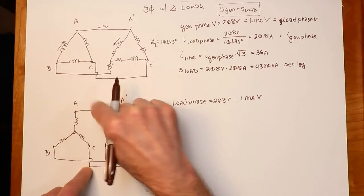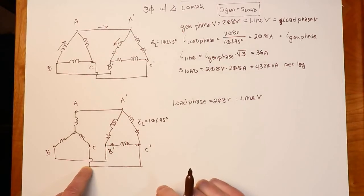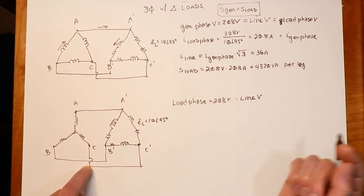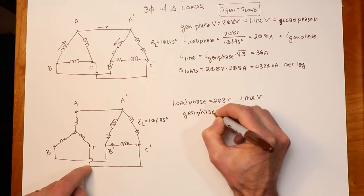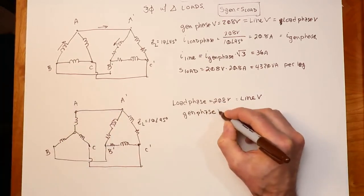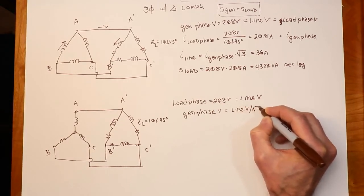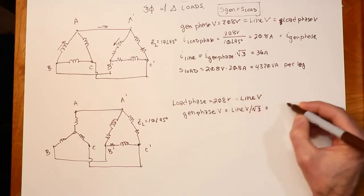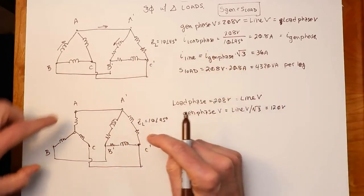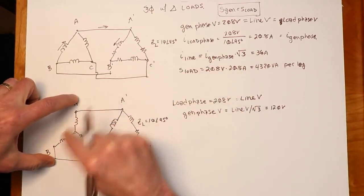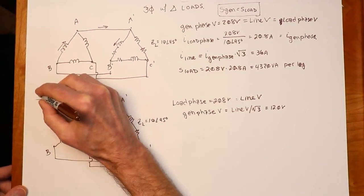Now I come back here and I say, what's the deal back here? Well, when we go from the Y configuration, you might remember from the preceding video, there's that square root of 3 that's going on. So if I want to find out what the generator phase voltage is, not the line, but the phase, that would be my line voltage divided by the square root of 3. And 208 divided by the square root of 3 gets you 120 volts.